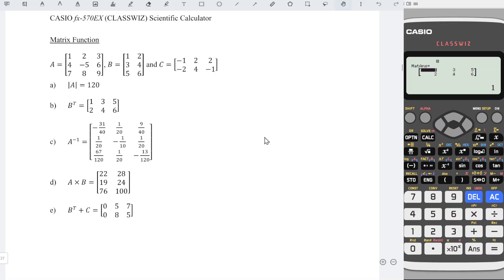Next, inverse of a matrix. So option, select matrix A, number 3. And we press the inverse button. Then we will obtain the inverse.